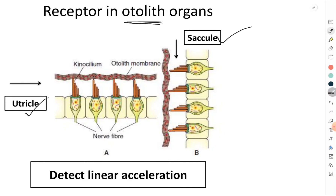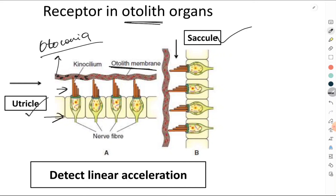In the otolith organs — the utricle and saccule — the hair cells have cilia embedded in a membrane called the otolith membrane. Unlike the cupular terminalis, the otolith membrane contains crystals made of calcium carbonate, called otoconia. Because of these calcium carbonate crystals, the specific gravity of the otolith membrane is higher than that of the endolymph.